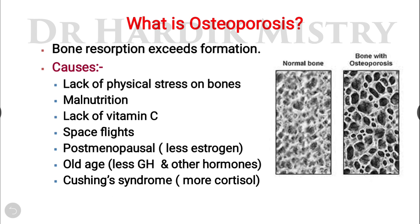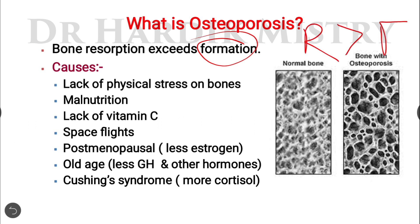What is Osteoporosis? When the process of bone resorption exceeds the formation — that means when the resorption process is more than that of the bone formation process — the condition is known as Osteoporosis.